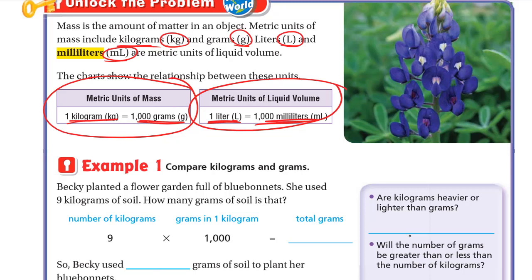And the same applies to liquid volume: one liter is 1,000 milliliters. So two liters equals 2,000 milliliters, and three liters equals 3,000 milliliters. You multiply the number of liters by 1,000 to get the number of milliliters.